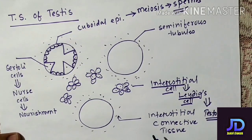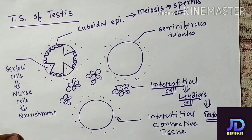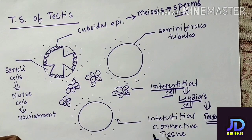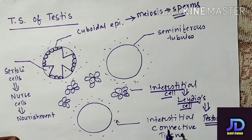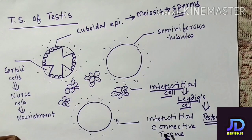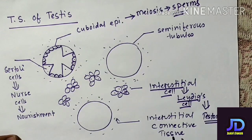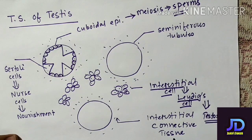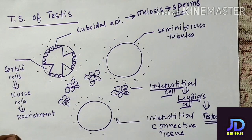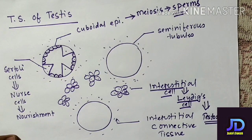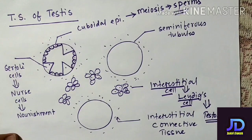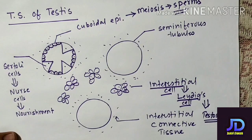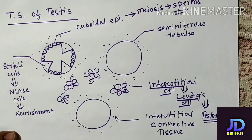For better understanding of the seminiferous tubules we studied the TS of testes. The seminiferous tubules are scattered in interstitial connective tissue and are lined with germinal epithelium, which has two types of cells: cuboidal epithelium, which undergoes meiosis to produce sperms, and Sertoli cells which are triangular, conical, and pyramid-shaped and provide nourishment to developing sperms. In the interstitial connective tissue there are cluster of cells called Leydig cells or interstitial cells which produce the male sex hormone testosterone.